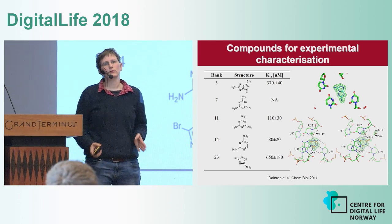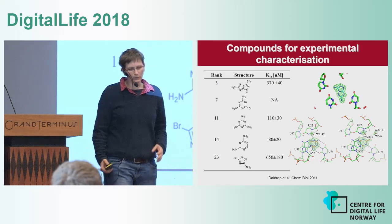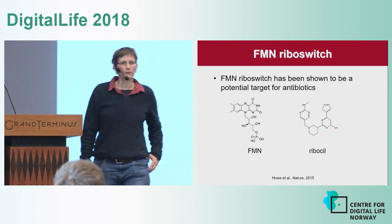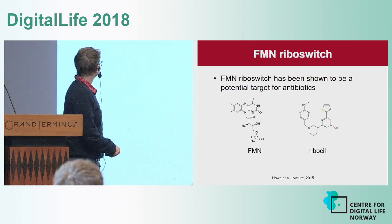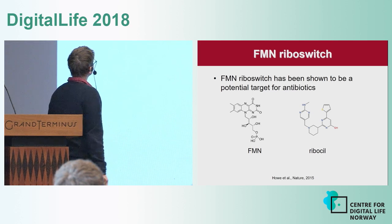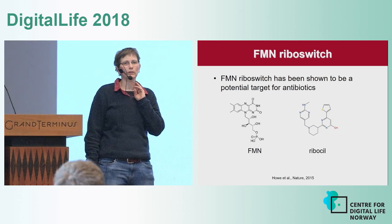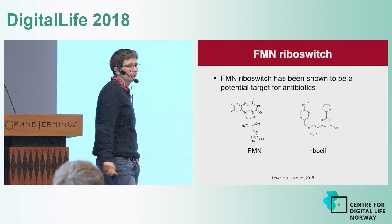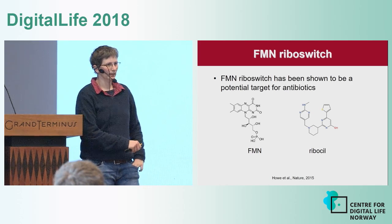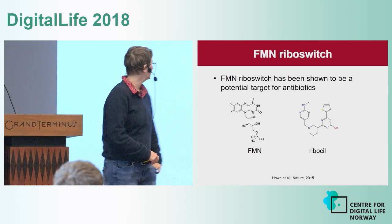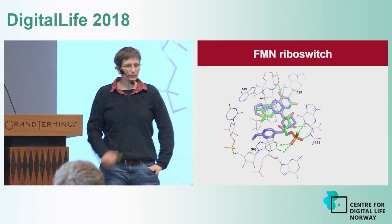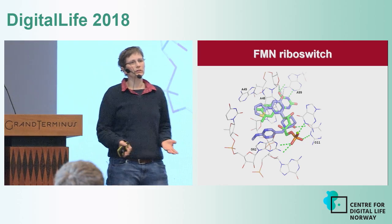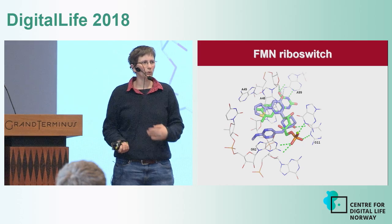We were confident enough to apply this approach to a more complex RNA riboswitch binding site. The riboswitch we focus on in our group is the FMN riboswitch. FMN is the natural ligand, and this riboswitch has been shown to be a potential target for antibiotics. About two years ago, researchers from Merck published the compound ribocil, found in a phenotypic screen, which has antibiotic activity most likely due to binding to this FMN riboswitch. The crystal structure of the FMN riboswitch with FMN has been determined, which we used for our docking approach.